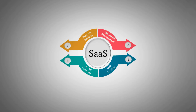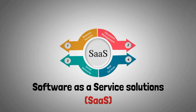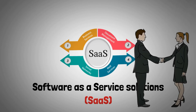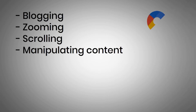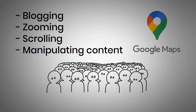Web 2.0 saw the rise of software-as-a-service solutions and the adoption of technologies such as HTML5, CSS3, and JavaScript frameworks. It introduced the concept of blogging, zooming, scrolling, and manipulating content — such as in Google Maps — in place of static websites that pushed content. Web 2.0 became even more popular in the early 2000s, altering the appearance of the web.